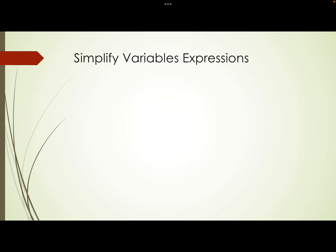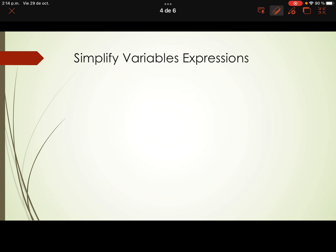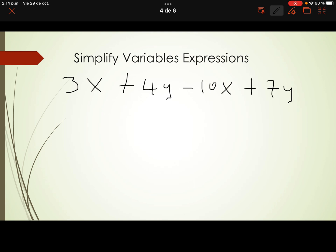Simplify the following variable expression: 3x plus 4y minus 5, minus 10x plus 7y. Simplifying this expression means collecting the like terms.